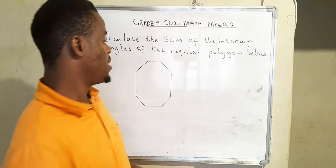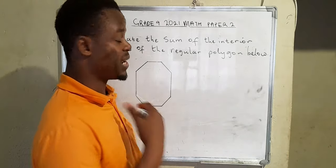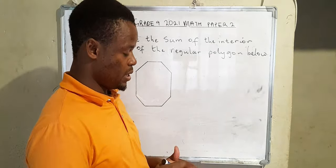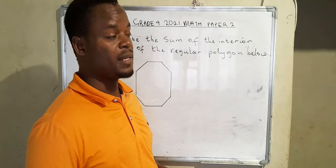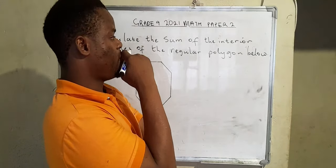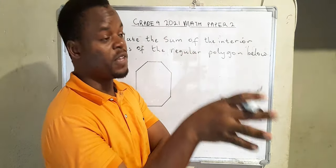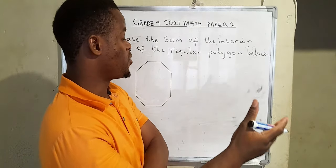First and foremost, you need to realize that we're talking about a regular polygon. A regular polygon has sides which are equal and the interior angles are equal. Now when they say find the sum of the interior angles of a regular polygon, how would you do that?